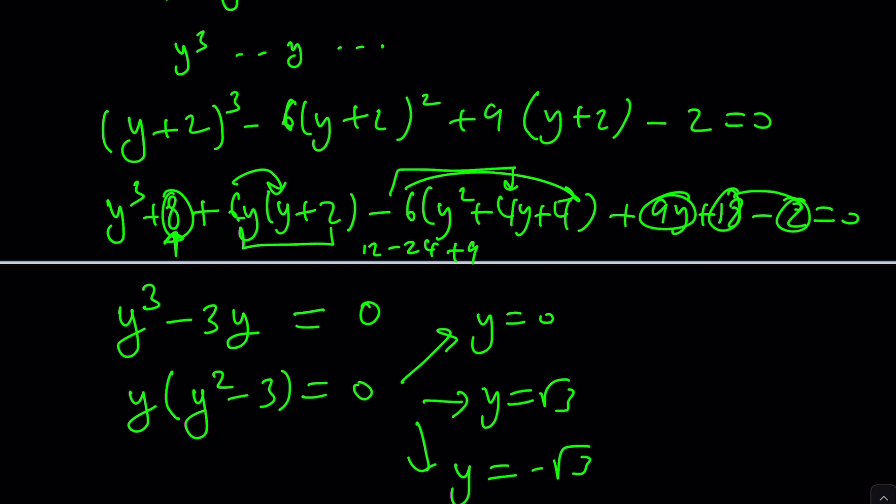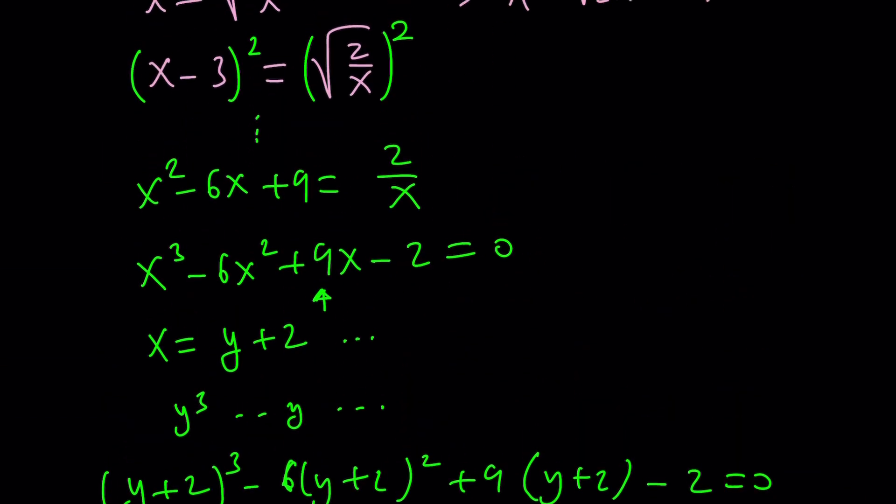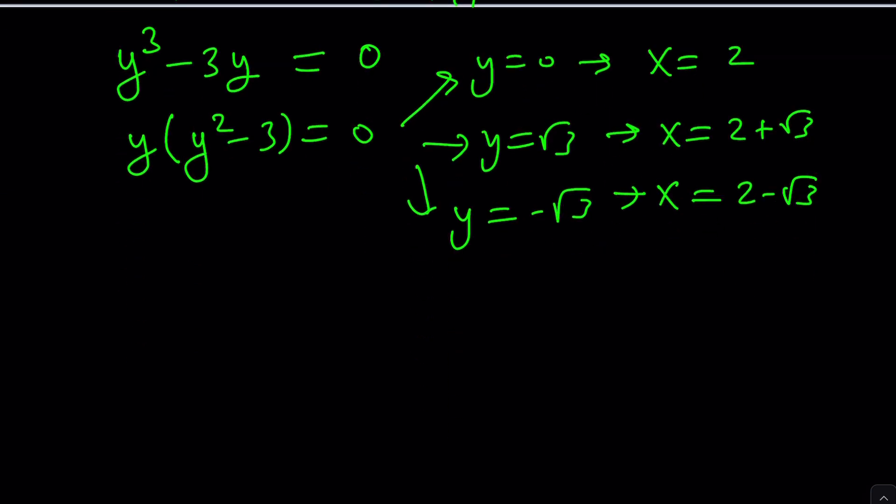So you can just add 2 to each one of these. X should be 2, x should be 2 plus root 3, and then x should be 2 minus root 3. All of these are positive, so they seem to satisfy the radical, but because we square both sides, we need to go back and check every single solution to make sure that it satisfies the original problem, and that's kind of cumbersome. You could probably approach it a little differently.